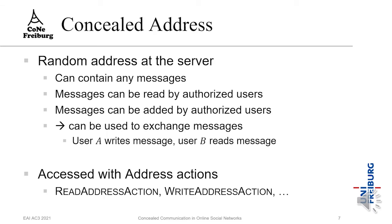To prevent analysis of such information, we created an online social network using concealed addresses. A concealed address is simply a random address at the server. These addresses can contain any messages, and messages can be read or added by authorized users. A concealed address can be used to exchange messages — for example, user A writes a message and user B reads it from the same address. Addresses can be accessed with read, write, or other address actions.